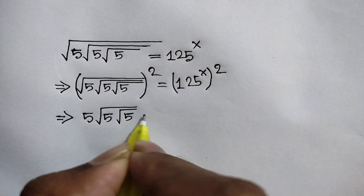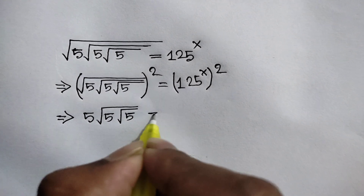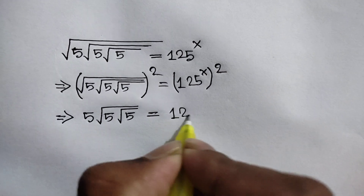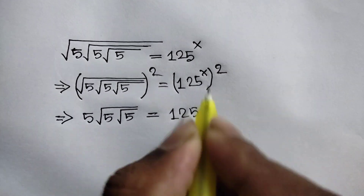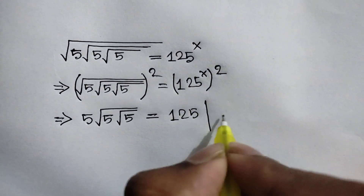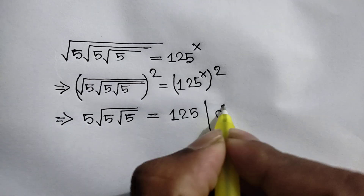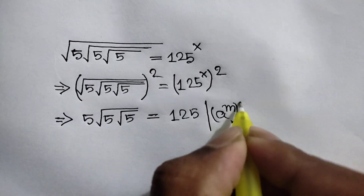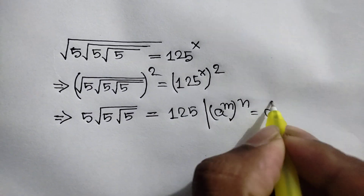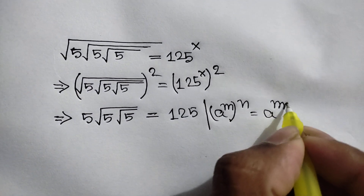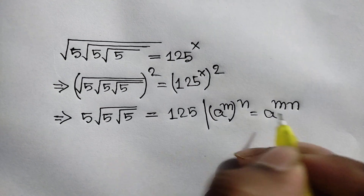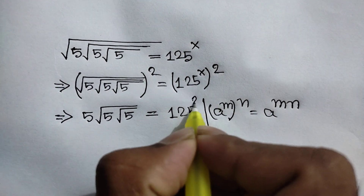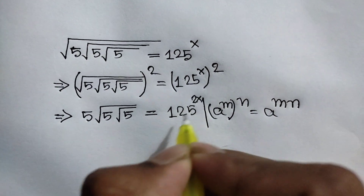This is equal to 125. Here we will apply this rule: a to the power m, whole power n, is equal to a to the power m times n. So here it becomes 125 to the power 2x.